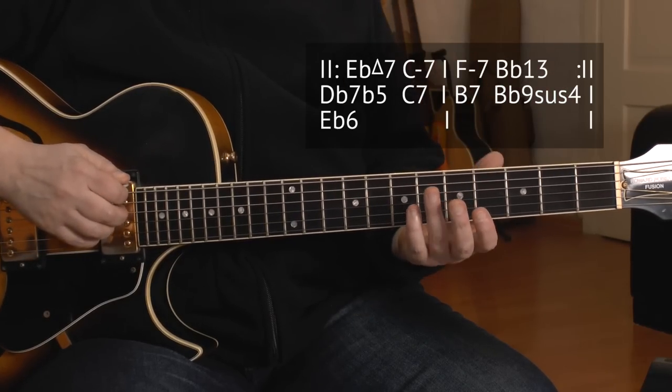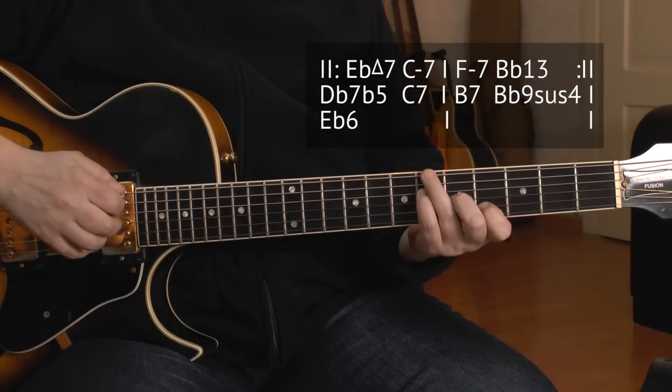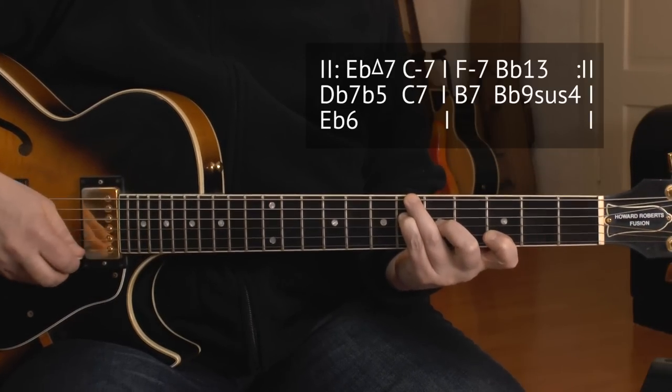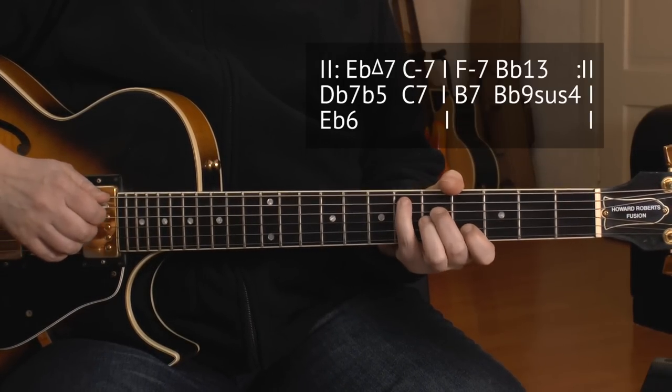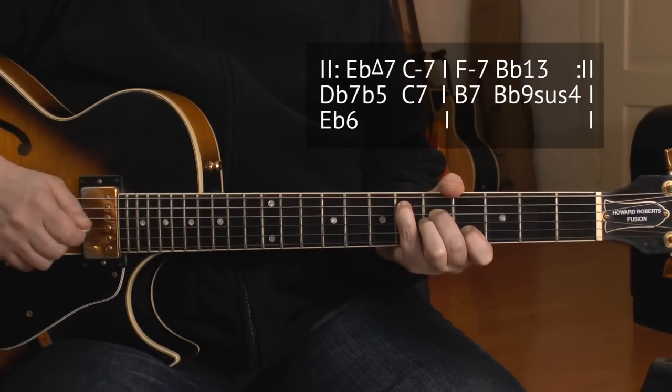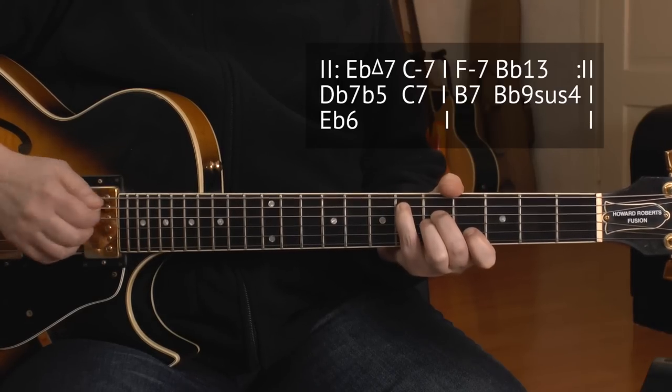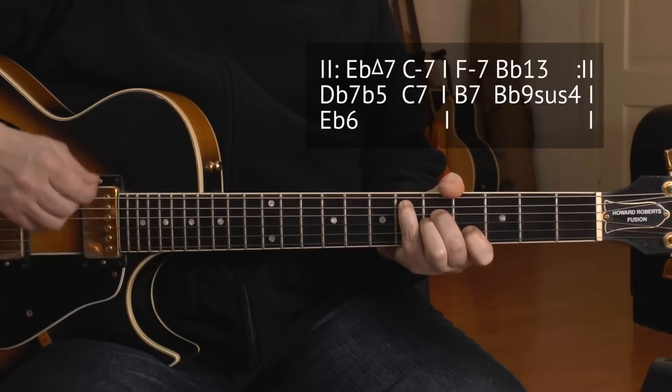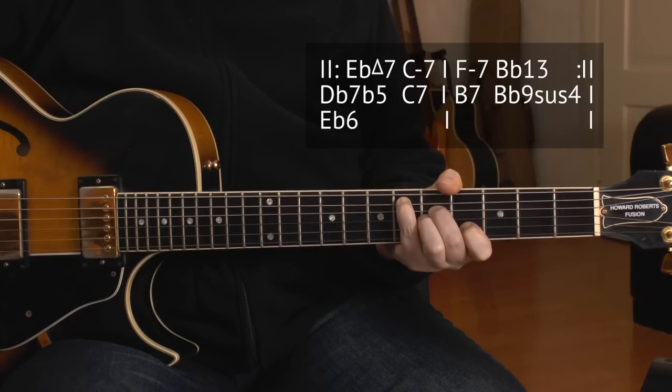As for section A3, the first six bars are totally identical to section A1 or A2 respectively, and at the end of bar 6, this is the Bb9sus4 chord, you go to the Eb6 chord, 6-5-5-4. That always follows it anyway, so this is our last chord. Let it ring.